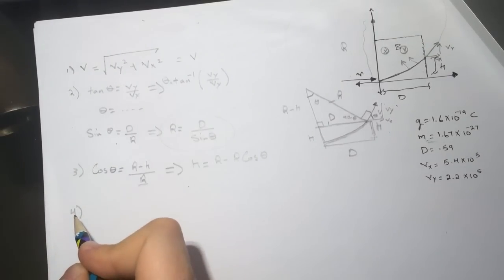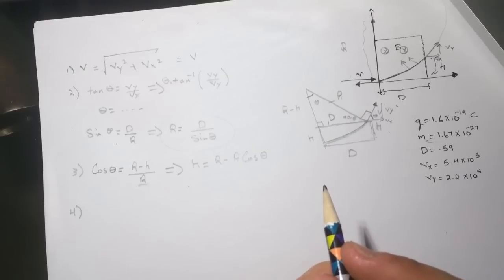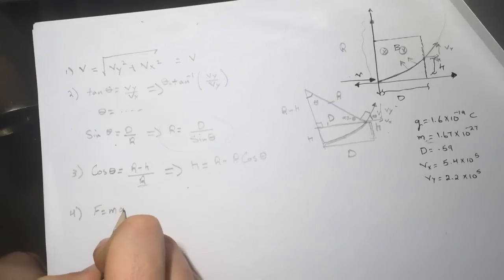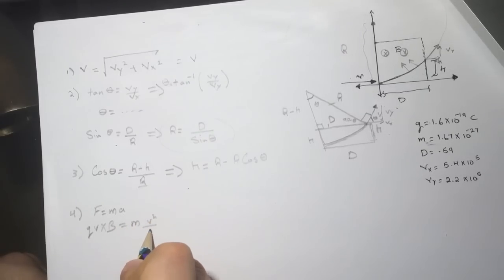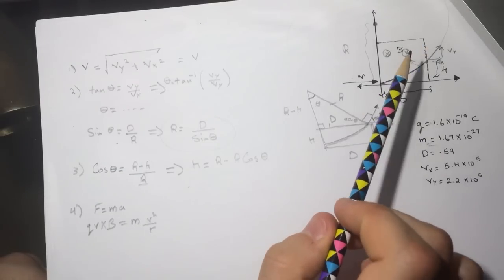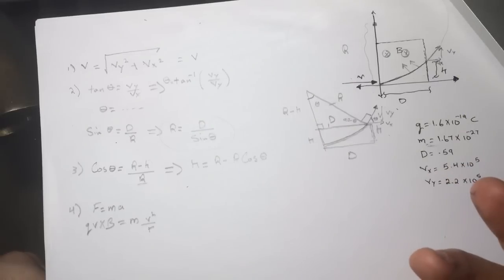So number four is asking what is the Bz, the component of the magnetic field. All right, so I always put this equation: F equals MA. Then the F here is QV cross with B equals M, and the A here is V squared over R. And the cross product will be sine of pi over 2, which is 1, because you can see that the B is in the Z direction and the V here is only in the XY direction.